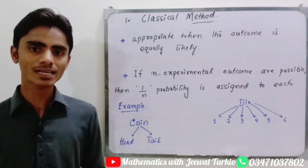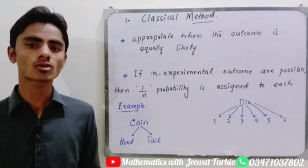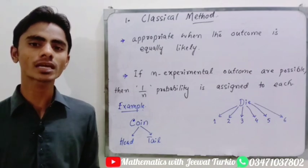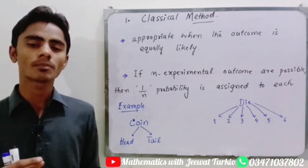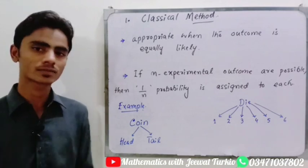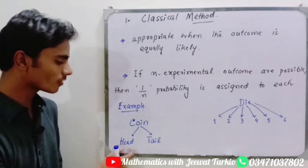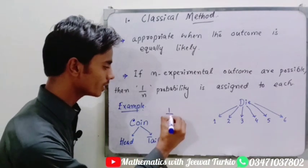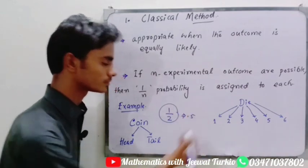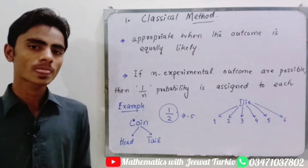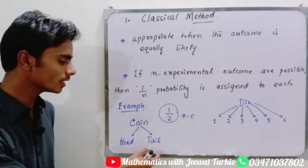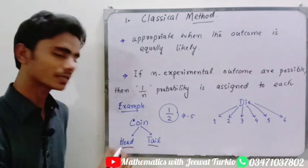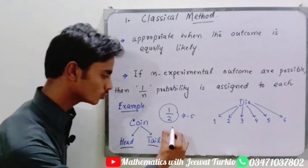Let's take an example of tossing a coin. The possible outcomes are two: a head or a tail. If we are asked what is the probability that by tossing a coin the result is head — since the chances of head or tail are equally likely, and there are two possibilities — the probability is one by two, or 0.5. Similarly, the probability of getting tail by tossing a coin is also 0.5, because head and tail are equally likely.